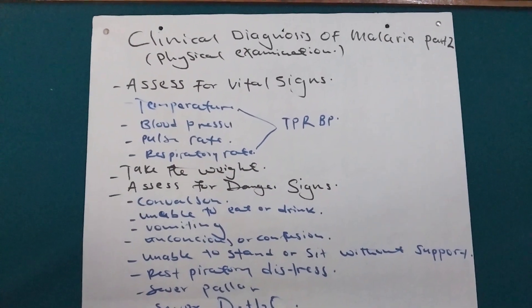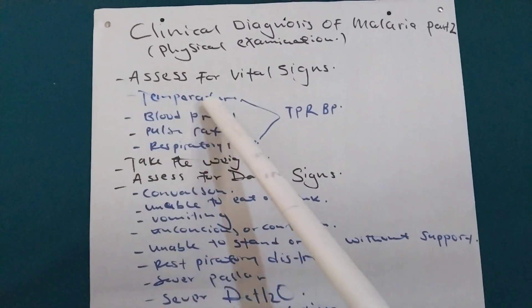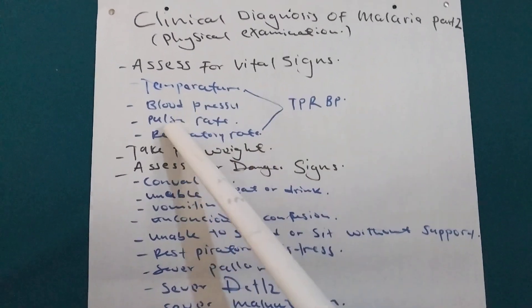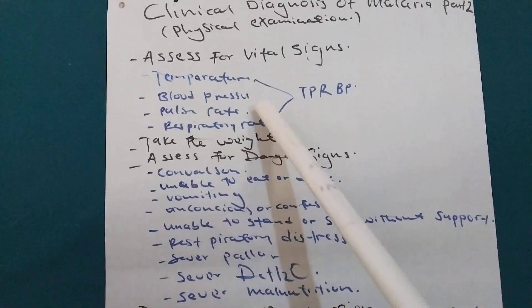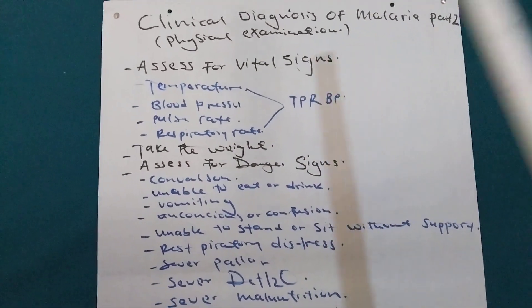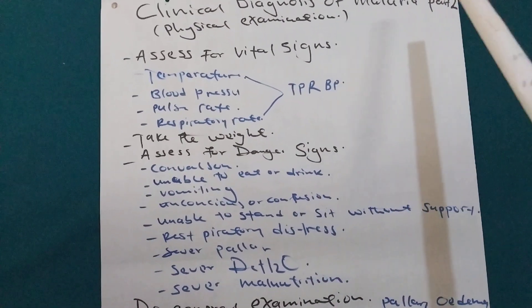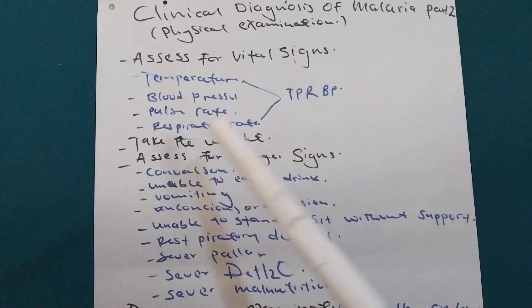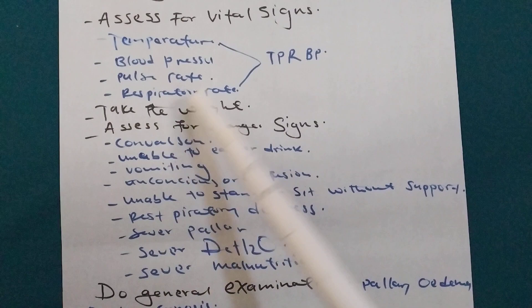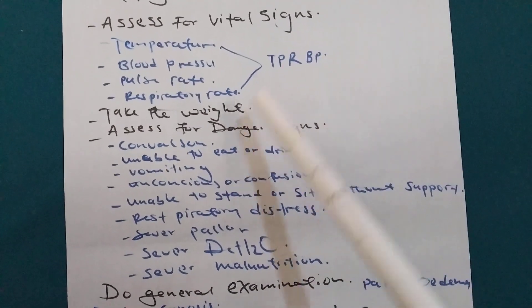On the assessment, we are going to assess for temperature, blood pressure, pulse rate, and respiratory rate — that is TPR and BP. And then we are going to take the weight of the patient. This will help us to calculate the dose of the antimalarials.